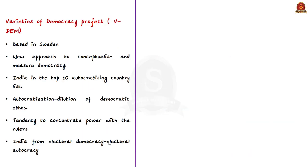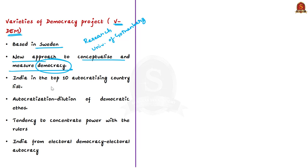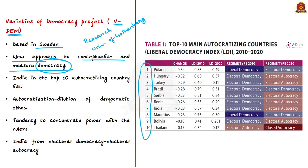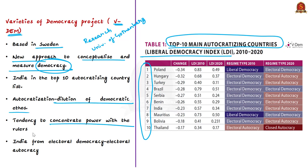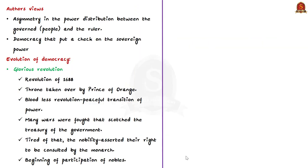The Varieties of Democracy Institute, shortly called VDEM Institute, is an independent research institute headquartered at the Department of Political Science, University of Gothenburg in Sweden. This project utilizes a new approach to conceptualize and measure democracy using a Liberal Democracy Index, and has placed India in the top 10 countries classified under autocracy type. Autocratization refers to dilution of democratic ethos where power is concentrated with rulers, and much policy happens without discussion or deliberation. India has thus transitioned from an electoral democracy in 2010 to an electoral autocracy in 2020 according to this report.